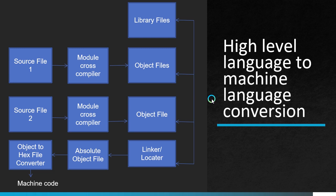Moving on to high level language to machine language conversion. As already mentioned, high level languages use a modular programming approach, so each source file is considered a module. Those module source files are converted to object files by a cross compiler. Different object files are then linked using a linker or locator, together with library files, to make an absolute object file. That absolute object file is then converted to machine code, which is a hex file, by using an object to hex file converter.